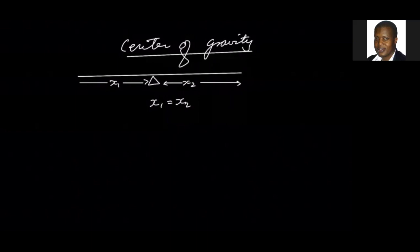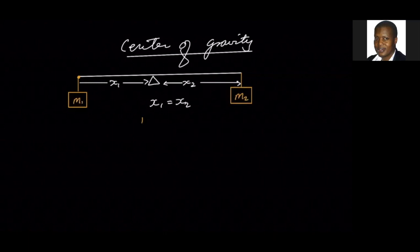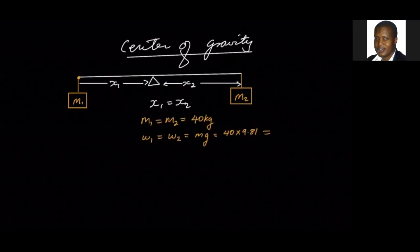And then we went on to put masses on both ends. So if m1 is equal to m2 and it's 40 kilograms, 40 times 9.81, that would be 392.4 newtons.